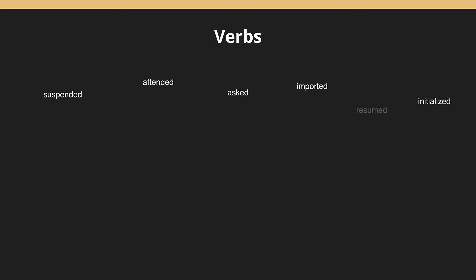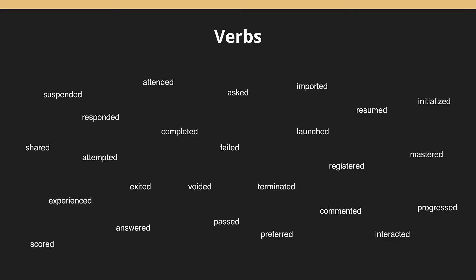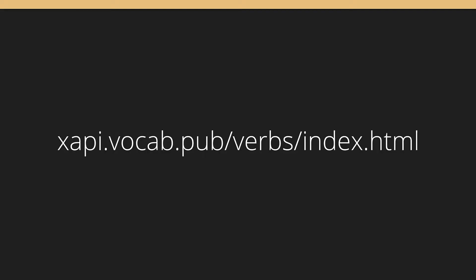The key is knowing who the person is, what action they did, and describing that action. When you send over statements you need to know who the learner is, what action they did, and describe that action. There are a lot of different verbs available — attended, asked, imported, resumed, launched, exited, failed, mastered — lots of possibilities. One of the biggest benefits to XAPI is not only can you track this information, but you can use it for future courses. When somebody launches a course, you can ask the LRS what they did, how long ago, and what their score was — then send them down different paths and personalize the content.